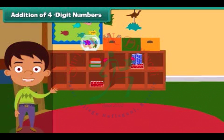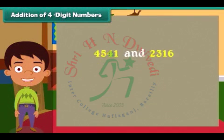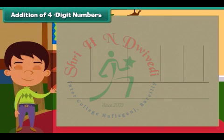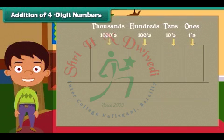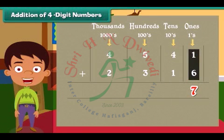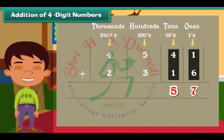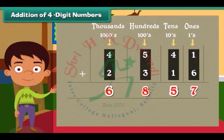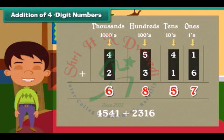Addition of four-digit numbers. The first problem that Ben picks to solve is to add 4541 and 2316. Start solving the question by writing the numbers in columns. Remember that we begin adding from ones — the addition is 7. Now we move to add the tens: 4 plus 1 is equal to 5. Similarly, we add the numbers under hundreds and thousands places. The numbers we get are 8 and 6 respectively. So 4541 and 2316 when added equals 6857.